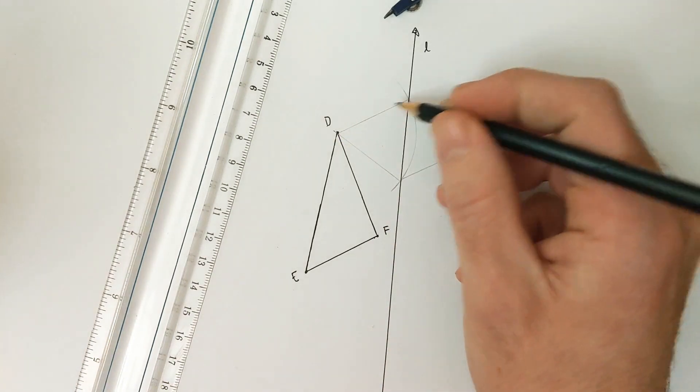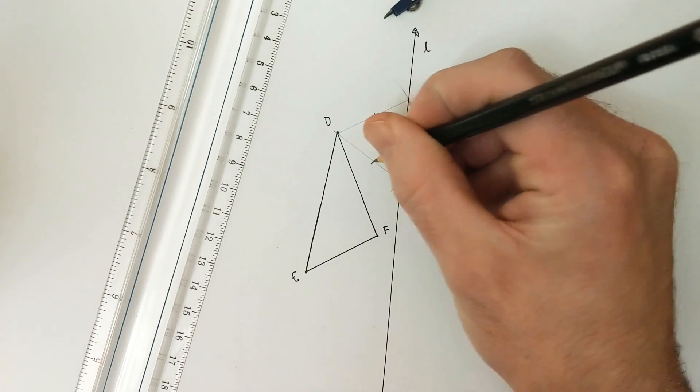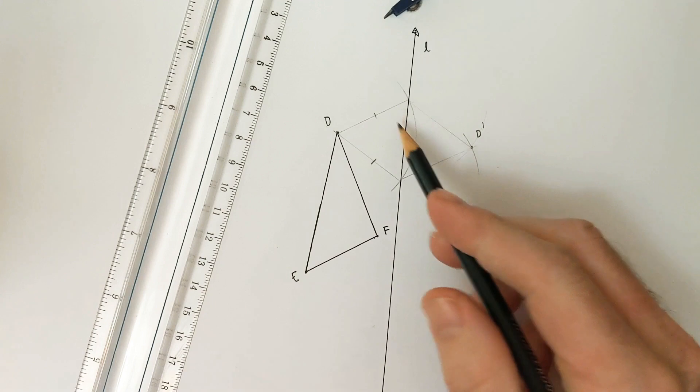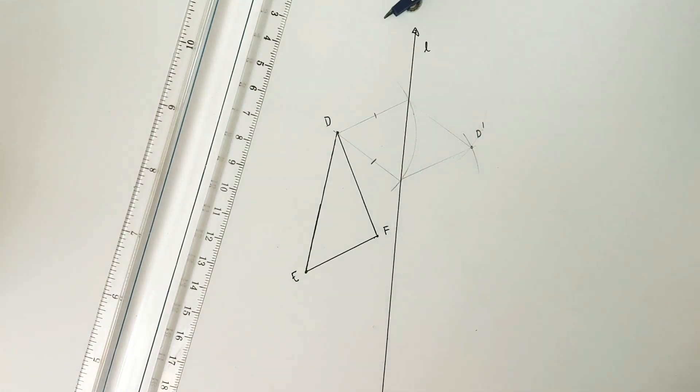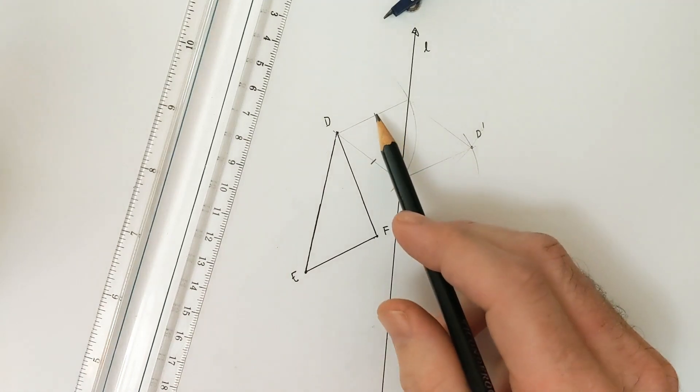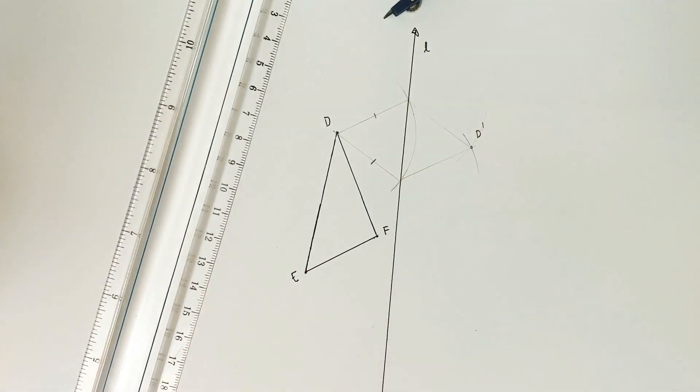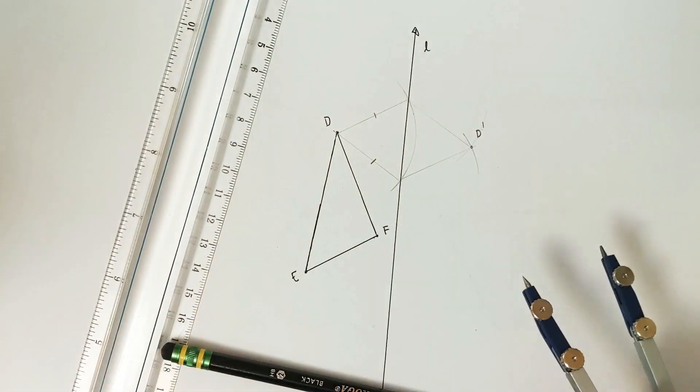And of course one of the properties of a circle is that it has the same radius all the way around. And so because those are both a radius, they have the same length and they're equal. Now this side may or may not actually be equal to these sides. It doesn't really matter. We don't care. It's just important the fact that these are isosceles triangles. And all we need is to show that two sides are equal.